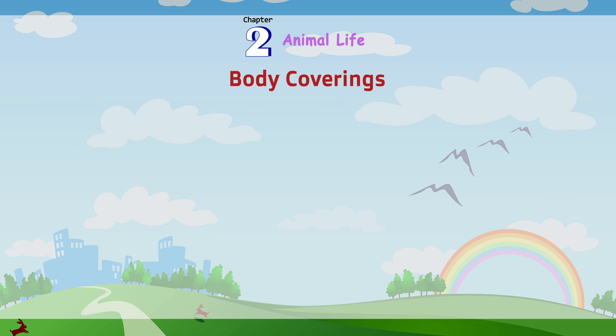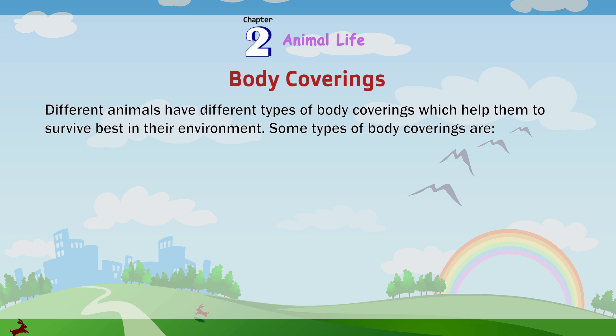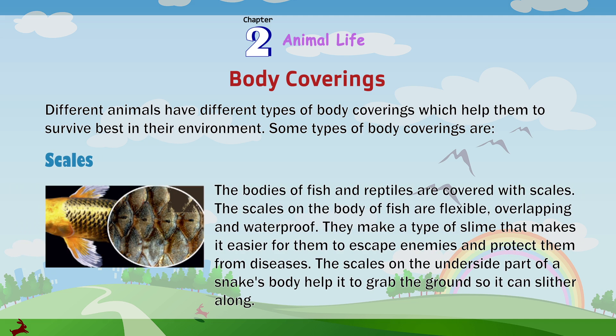Body Coverings. Different animals have different types of body coverings which help them to survive best in their environment. Scales: The bodies of fish and reptiles are covered with scales. The scales on the body of fish are flexible, overlapping and waterproof. They produce a type of slime that makes it easier for them to escape enemies and protect them from diseases. The scales on the underside of a snake's body help it to grab the ground so it can slither along.